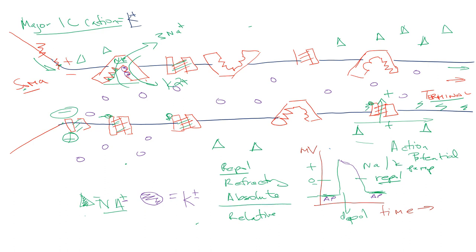Let me use a toilet analogy. We have a toilet tank and bowl. The tank at full (state one) is like our action potential — ready to do work. When you flush, the tank empties — that's depolarization. If you immediately try to flush again while it's empty, you get no flush — that's the absolute refractory period. If you wait a bit and the tank is only half full and you flush, you get a weak flush — that's the relative refractory period.